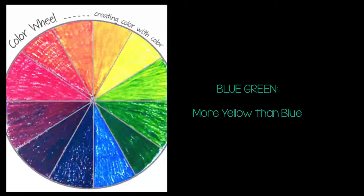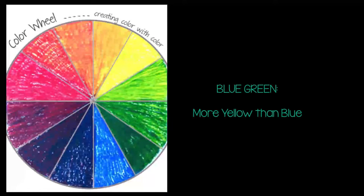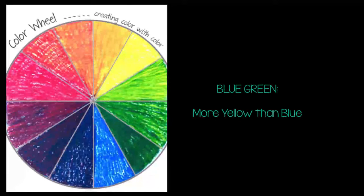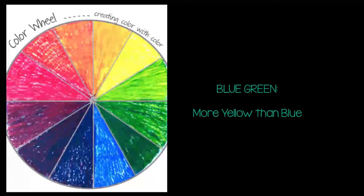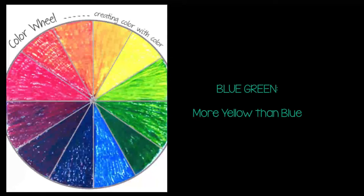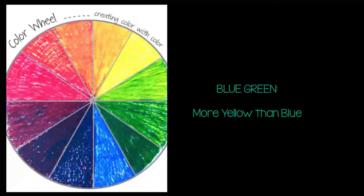For our final color, we will create blue-green. Start by laying a fine layer of yellow down in the section. Go over the yellow with the blue, blending to create a blue-green. Just like with the other colors, if it's too close to your green, add a little more blue. If it's too close to your blue, add a little more yellow.